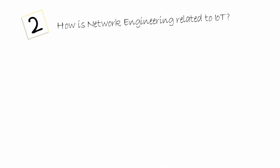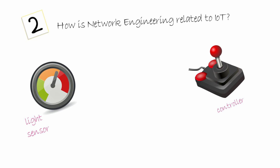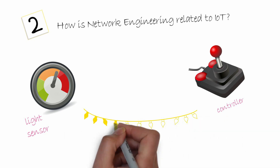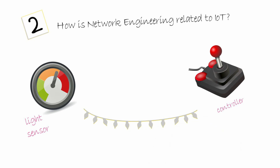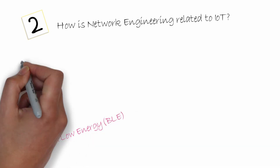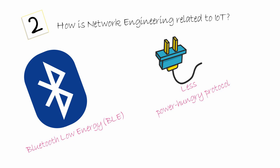How is network engineering related to IoT? In our example of the light sensor and the controller, these two devices must be able to talk to each other so that the controller can decide whether to turn on or turn off the light based on the reading from the light sensor. This can be achieved through wired or wireless network technologies. A simple application like this usually uses Bluetooth Low Energy, BLE for short, which is a less power-hungry protocol and can operate for years on a simple AA battery.